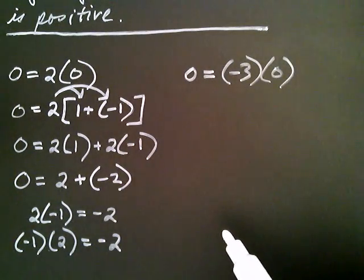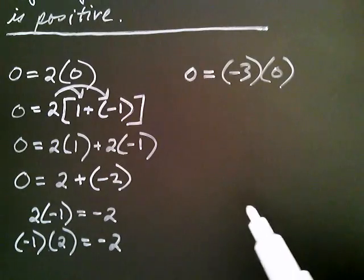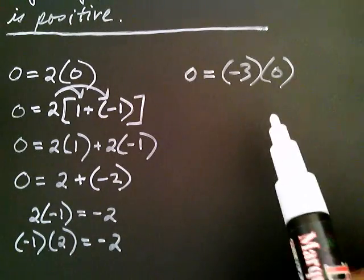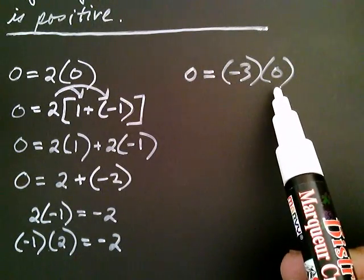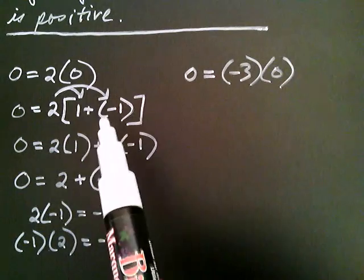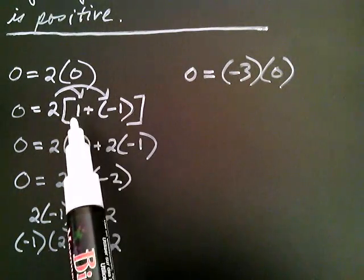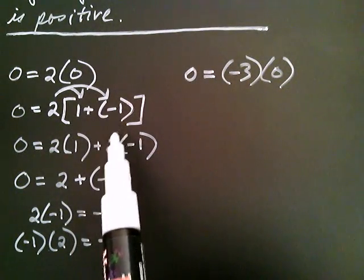These steps are going to look very similar. We're again going to write zero in that creative way — as one plus negative one, just like we did before.